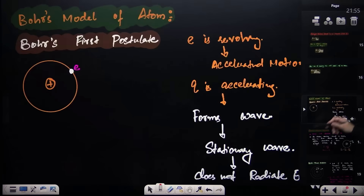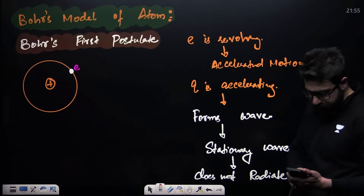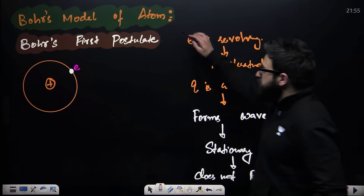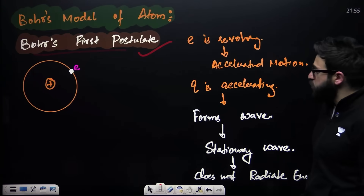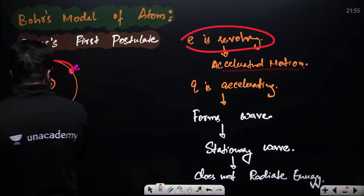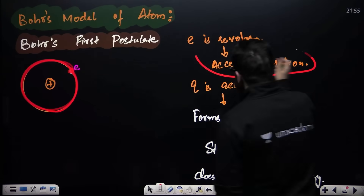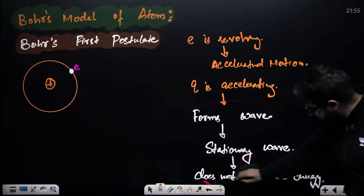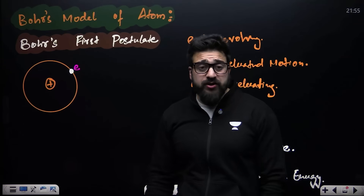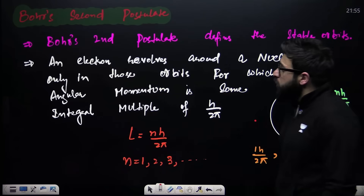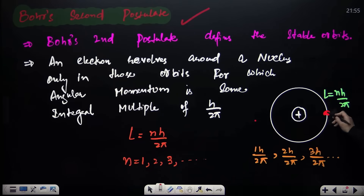Moving to the next chapter: atoms. Bohr's first postulate states that an electron revolves around the nucleus in accelerated motion, forming a stationary wave, which means it does not radiate energy. Bohr's second postulate: an electron moves only in those orbits where its angular momentum is n times h divided by 2π.